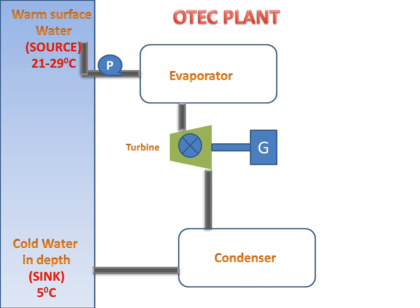Now we will see the animation. The water will come into the evaporator, then it will go to the turbine. The turbine will start rotating. Then the extra water, hot water, and steam pass to the condenser for further processing. This is the working of the OTC plant using surface water temperature and deep water temperature.